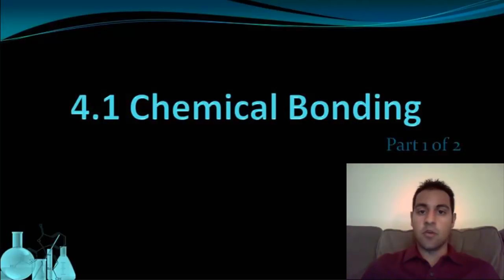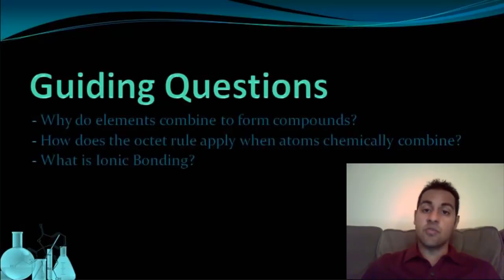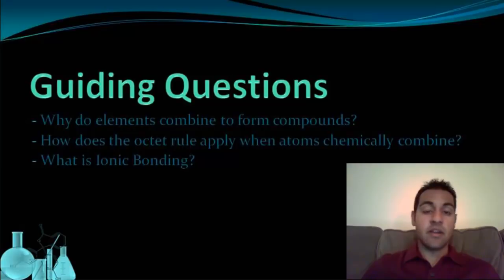Welcome to Chemical Bonding, Part 1 of 2. In this video and the next, we're going to look at how different elements join together to form compounds, which we've said are new substances with new properties. This joining together of elements is called bonding. In this first part, we're going to focus on the bonding that occurs between a metal and a nonmetal.